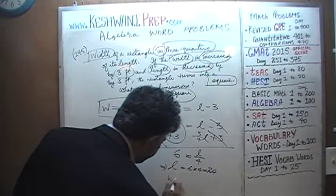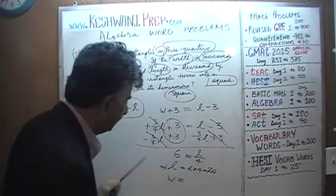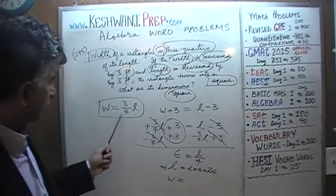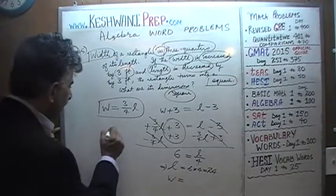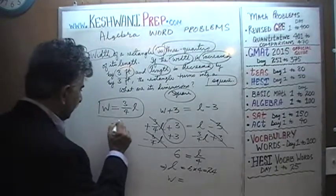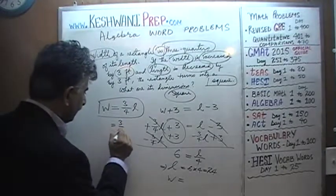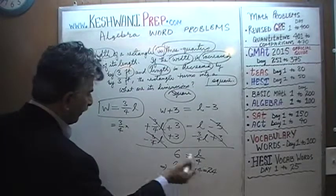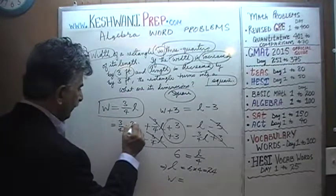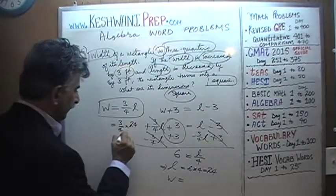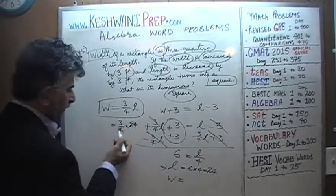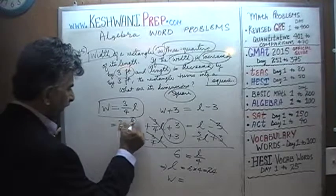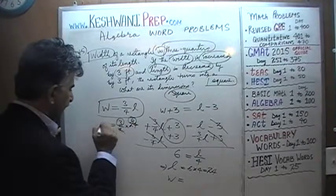Once we have the length, we can figure out W. W is simply 3 quarters of the length, which we just found is 24. Dividing top and bottom by 4 gives us 6 times 3, which is 18.